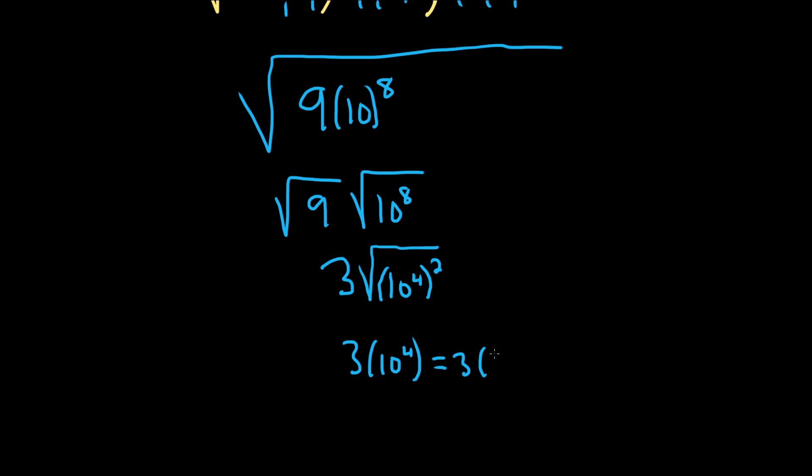This is 3 and then 1 and then 4 zeros. 1, 2, 3, 4. Now you just multiply the 3 by the 1. And so we end up with 3, 1, 2, 3, 4.